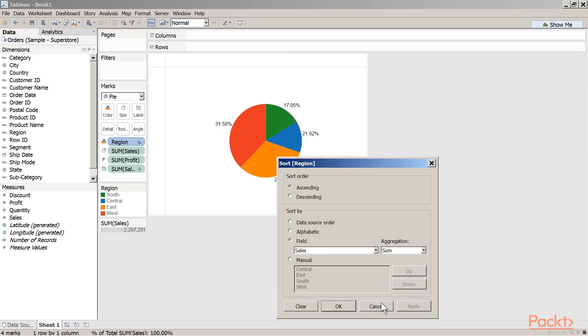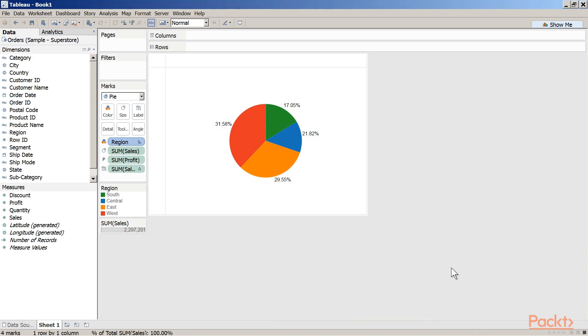Click on apply and then click on OK. Notice that the slices are now arranged in ascending order of sales. You just learned how to create a pie chart in Tableau.